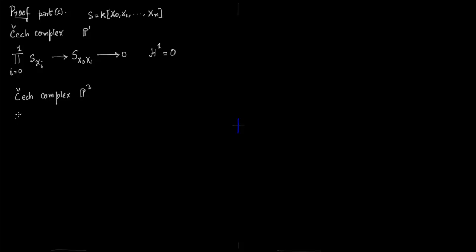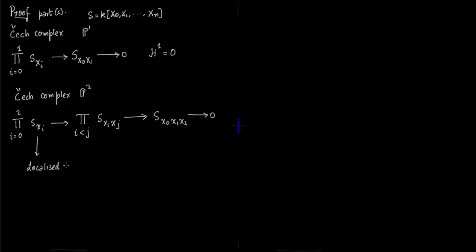Now let us move a bit further to the Čech complex of P². So now you have three sets x0, x1, and x2. Just like the Čech complex, you have this, and then you end at x0, x1, x2, to 0. Ring S in P² will be k[x0, x1, x2]. S subscript xi is localizing at xi, here you localize at xi, xj, and here you localize at x0, x1, x2 — the product.